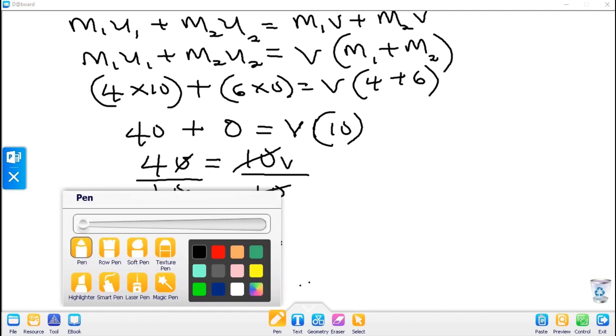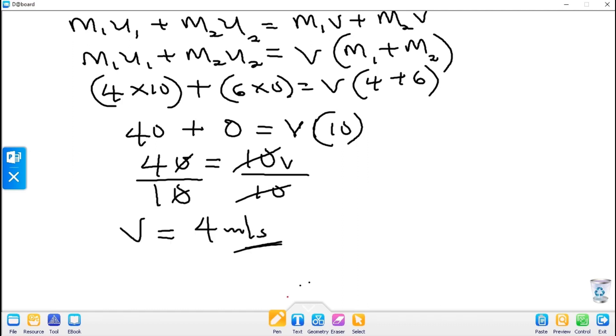Therefore the diagram can be in this form. Let's say this is mass 1, this is mass 2. This is M1, this is M2. This contains 4 kg, this is 6 kg. Here U equals 0, here U equals 10.